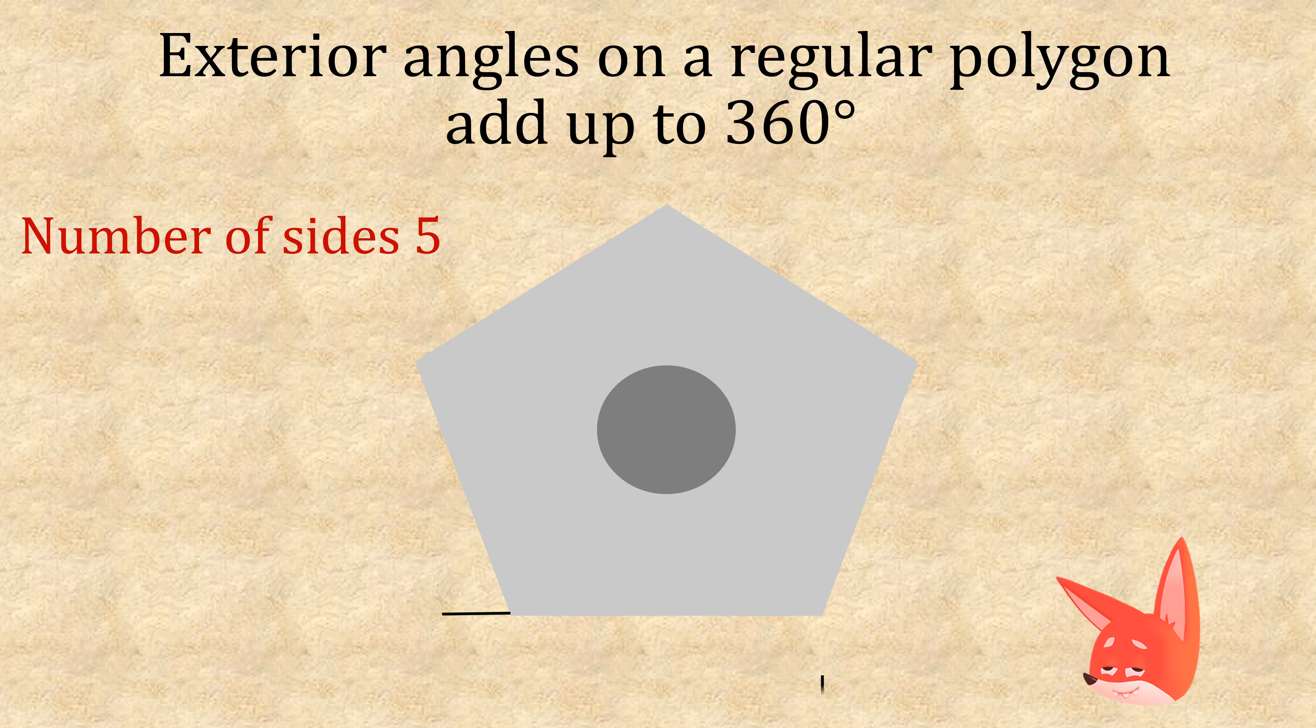This shape has five sides, so we start with 360 and divide it by 5, which equals 72. Therefore, each angle equals 72 degrees.